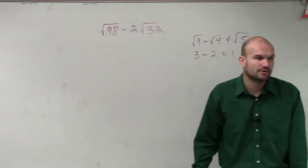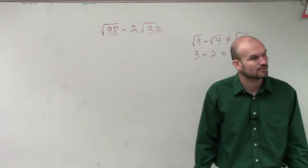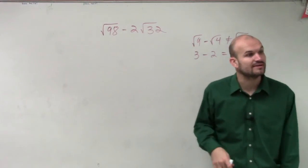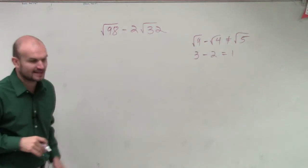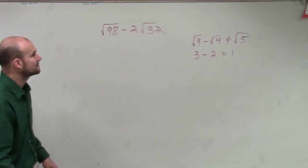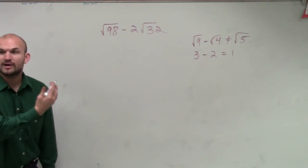So we can't just say the square root of 98 minus 32. That's not going to work. What we're going to have to do is simplify these. So going back to our product rule, I need to say, can I rewrite this as a square term?